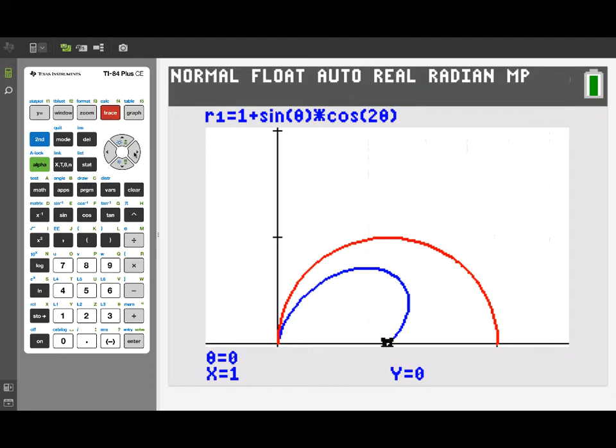When I turn on the trace feature, we notice the trace now gives us theta values as well as the x and y coordinates as we trace along the curve. Right now I'm on the first curve, R1, which is the blue curve.